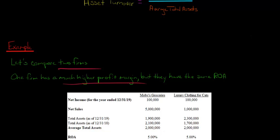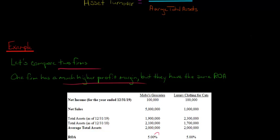So the ROA — return on assets — for each of these companies would be 5%. The ROA is just the net income divided by average total assets. For each company, it's $100,000 divided by $2 million, which gives you 0.05, or 5% when you multiply by 100.